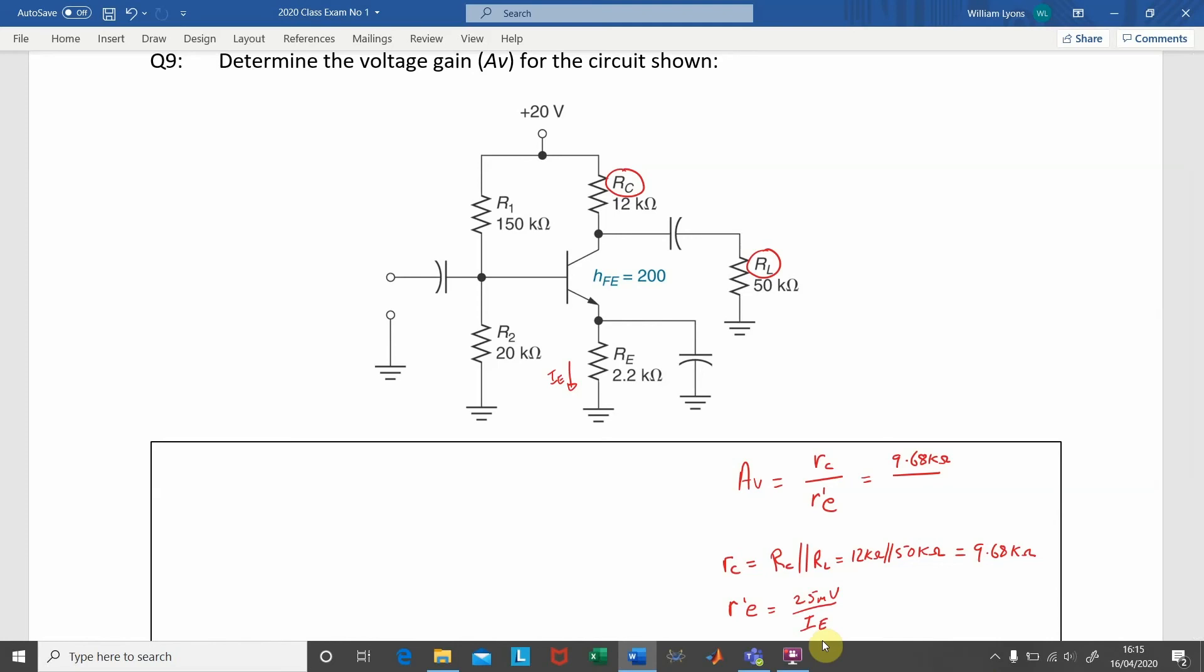Our first step here will be to find the value of the voltage at the base, VB. We also note that the voltage between the base and emitter, VBE, is equal to 0.7 volts.